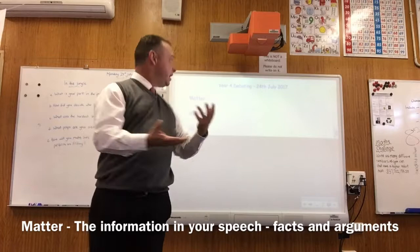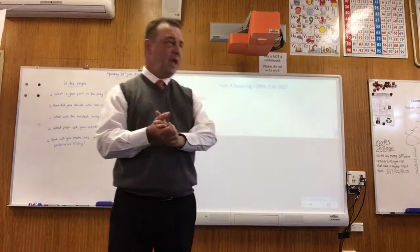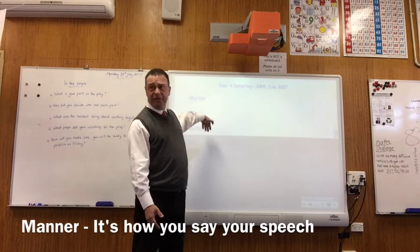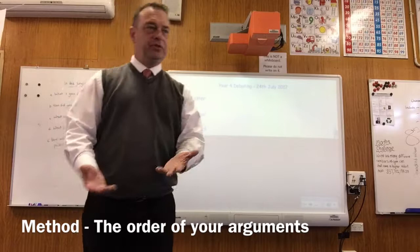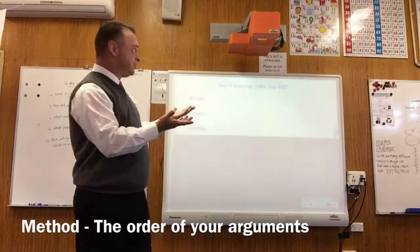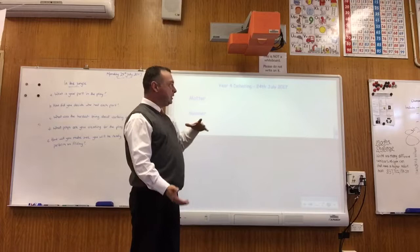What about the manner? What's the manner of your speech? Like how to say it. Yeah, how you say it. So how you say something. All right, so matter is the stuff that's in your speech, the information. Manner is how you say it. Method, therefore, is - yeah, how you order your stuff. So I start with an introduction. I have a conclusion at the end. I've got my points in the middle. They all kind of go together in a cohesive or well-ordered way. And that's my speech. That's the three things. The stuff I say. How I say it. And what order it's in.